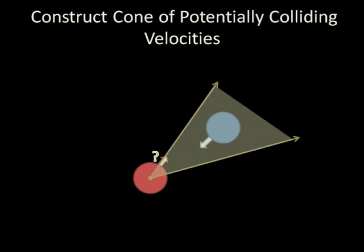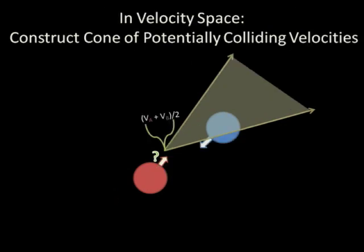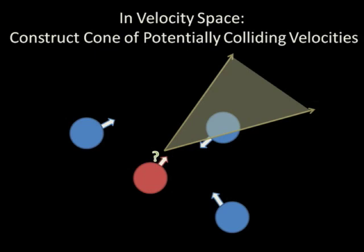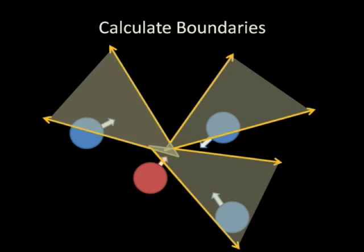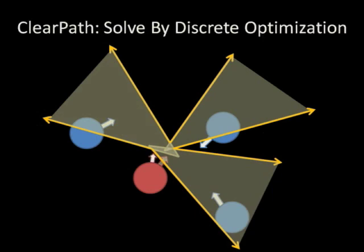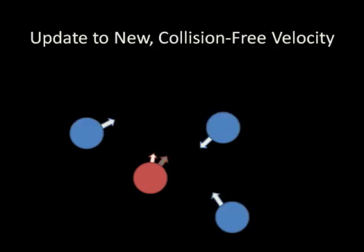To account for the fact that both agents will move to avoid each other, the cone's apex is moved to lie at the average velocity of the two agents. This process is repeated for each of the red agent's neighbors and all of the resulting velocity obstacle cones are unioned together. We efficiently find the boundary of this region and project the agent's desired velocity to the closest point along the boundary. This is the nearest safe velocity that the red agent can take.